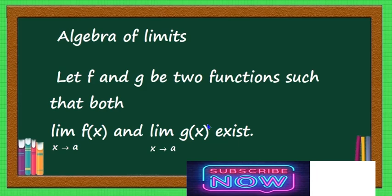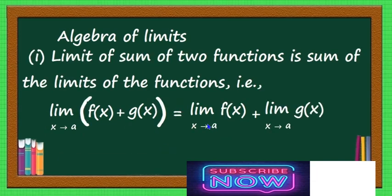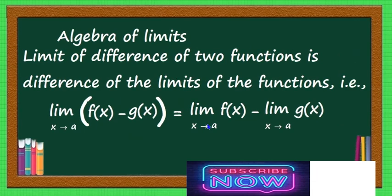Let us go through some standard formulae. Let f and g be two functions such that both limit x tends to a of f(x) and limit x tends to a of g(x) exist. The first rule: the limit of the sum of two functions is the sum of the limits — limit x tends to a of [f(x) + g(x)] = limit x tends to a f(x) + limit x tends to a g(x). Similarly, the limit of the difference equals the difference of the limits.